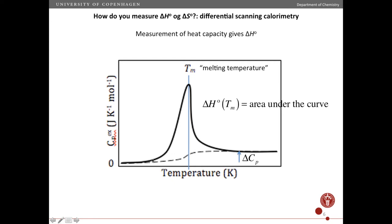...and as we increase the temperature of the system, we find that the heat capacity increases, reaches a maximum, and then decreases again here. So that delta Cp is the difference between the heat capacity of the products here minus the reactants here. And then we get delta H standard by the area under this curve here. This is delta H standard at the temperature where the heat capacity is a maximum. That's called the melting temperature.